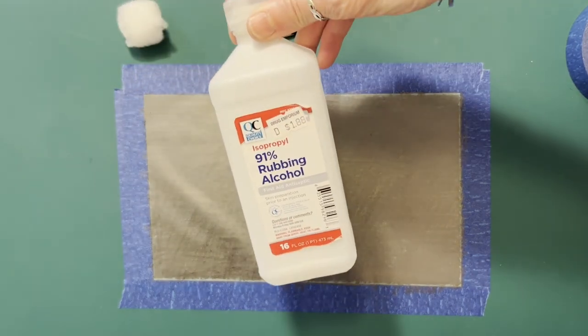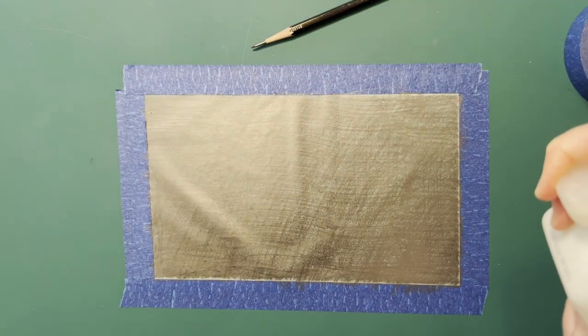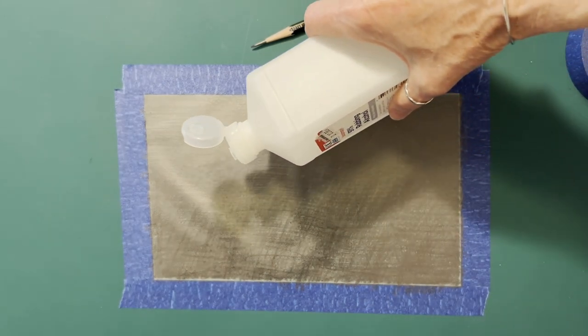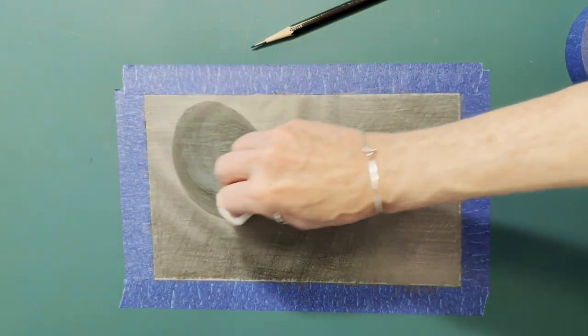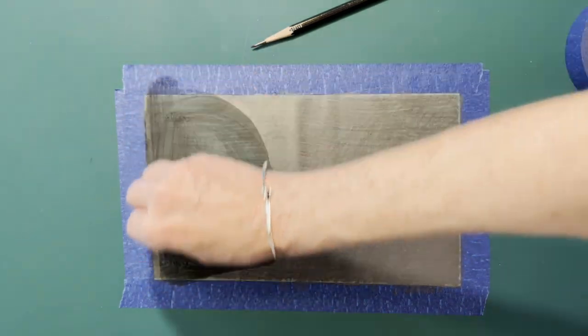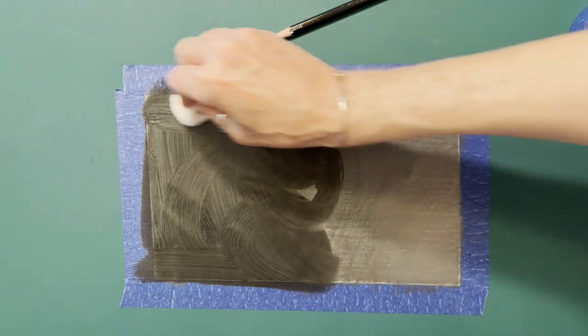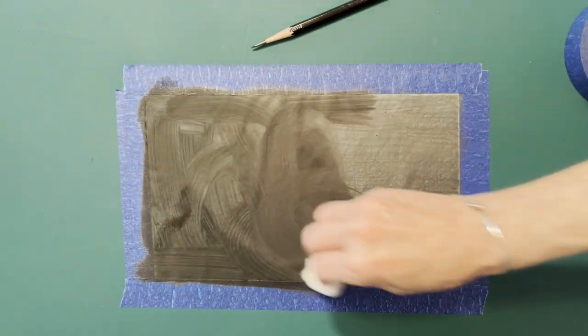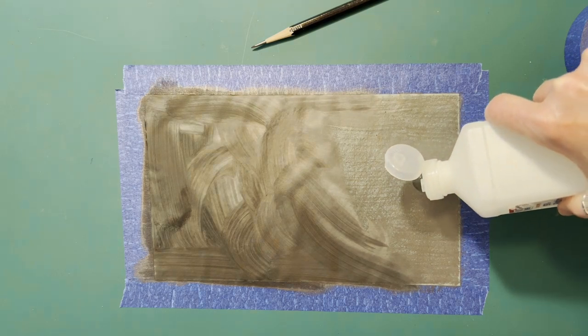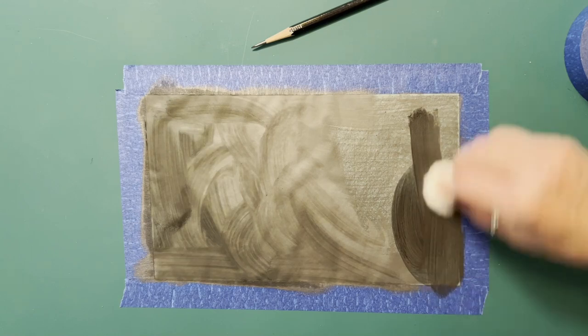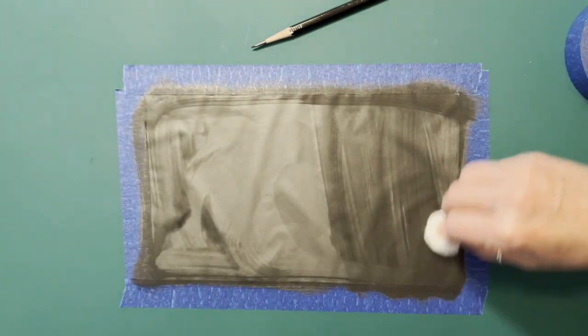Now we're going to take some plain rubbing alcohol and a cotton ball and pour just a tiny bit of alcohol on the paper and spread it around. It dries quickly so you want to move pretty fast. What we're doing is making sure that the graphite has covered every single little inch of the paper.